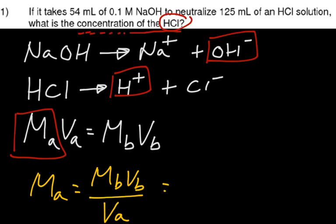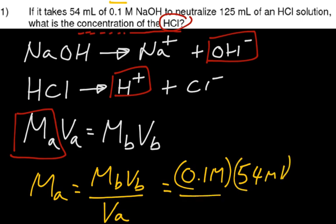So all we do from here now, we plug actual numbers and units in, and go from there. The molarity of the base, we notice over here, is 0.1 big M. The volume of the base in question is 54 mLs, and we divide that by the volume of the acid, which is 125 mLs.